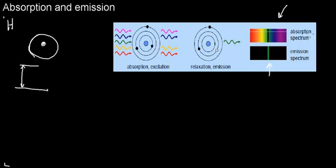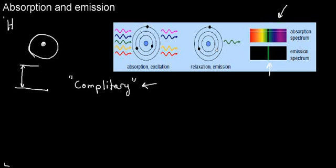The absorption spectrum for hydrogen is very limited. What's very important to understand is the relationship between the absorption and emission spectrum: whatever color it does not emit, it will absorb. This is called complementary — similar to complementary events in biostatistics. Absorption and emission spectra are complementary to one another; it can absorb all the ranges of wavelengths that it does not emit.